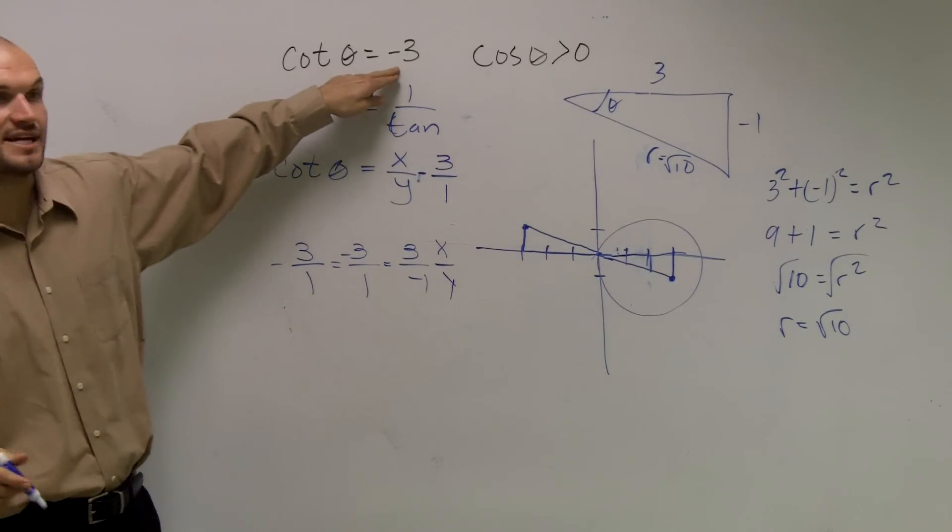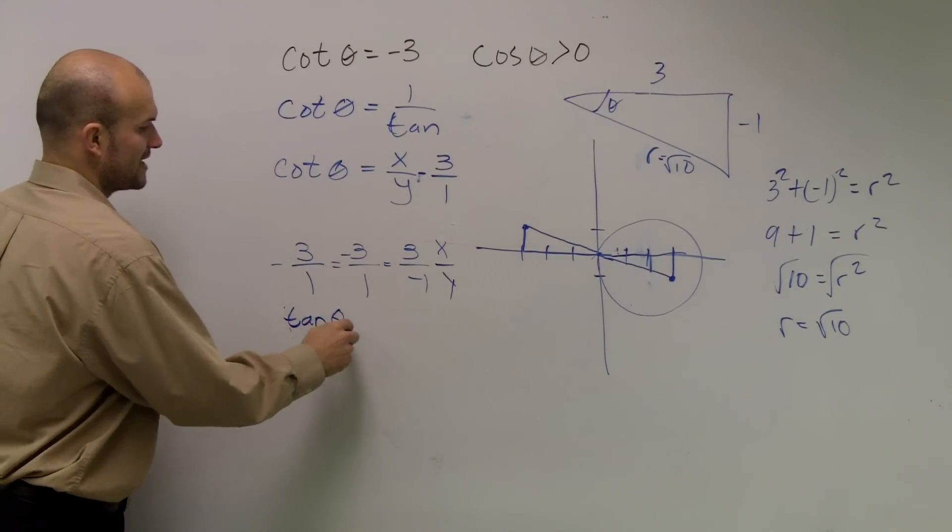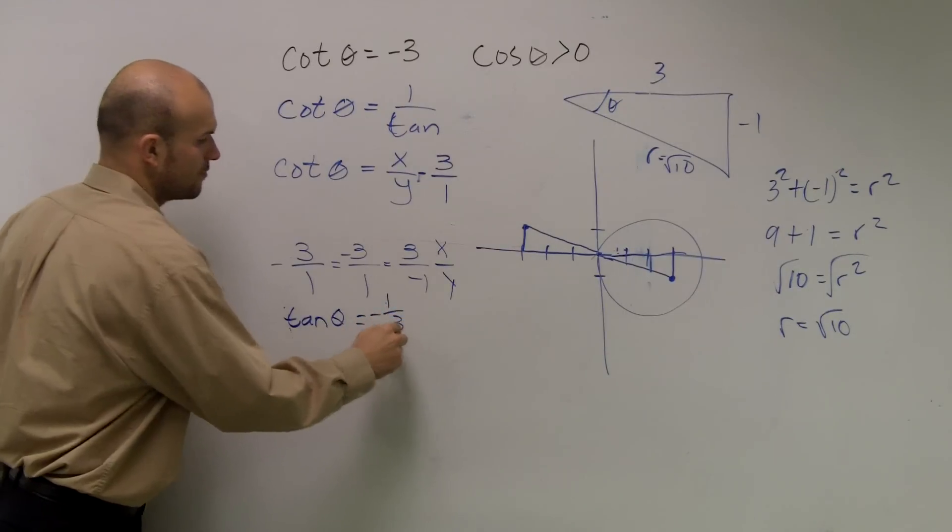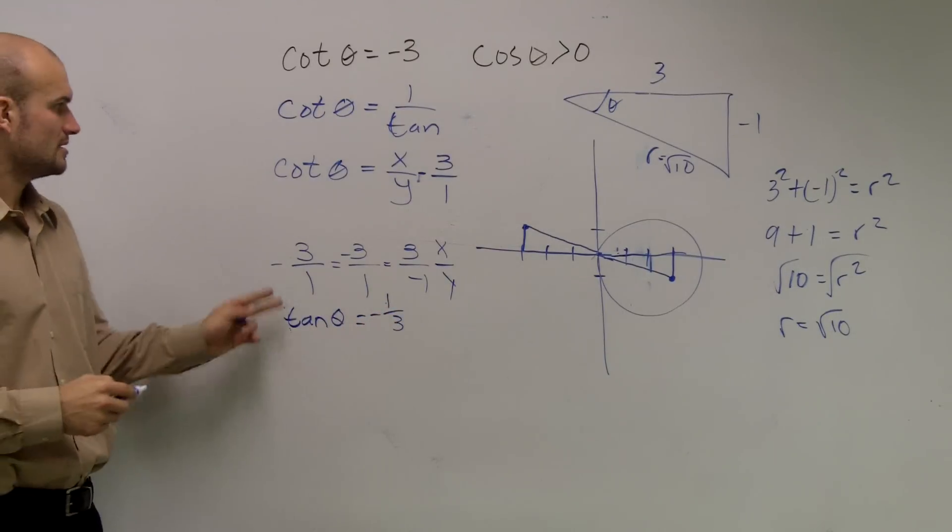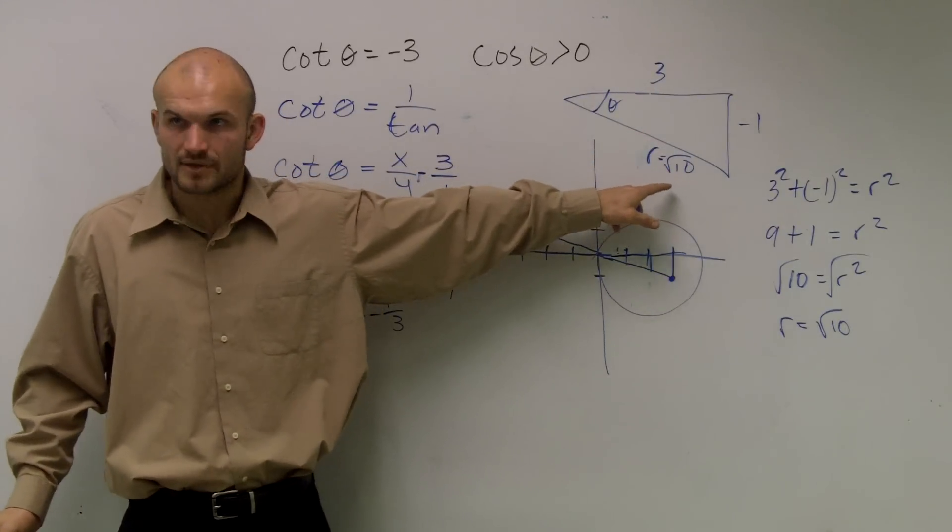So I figured out that cotangent was negative 3. I can easily find out tangent because this guy's tangent of theta is going to be the reciprocal of that, right? So that's going to be a negative 1 third. Okay? Tangent and cotangent, you don't need to know what the radius is or our hypotenuse. Right?